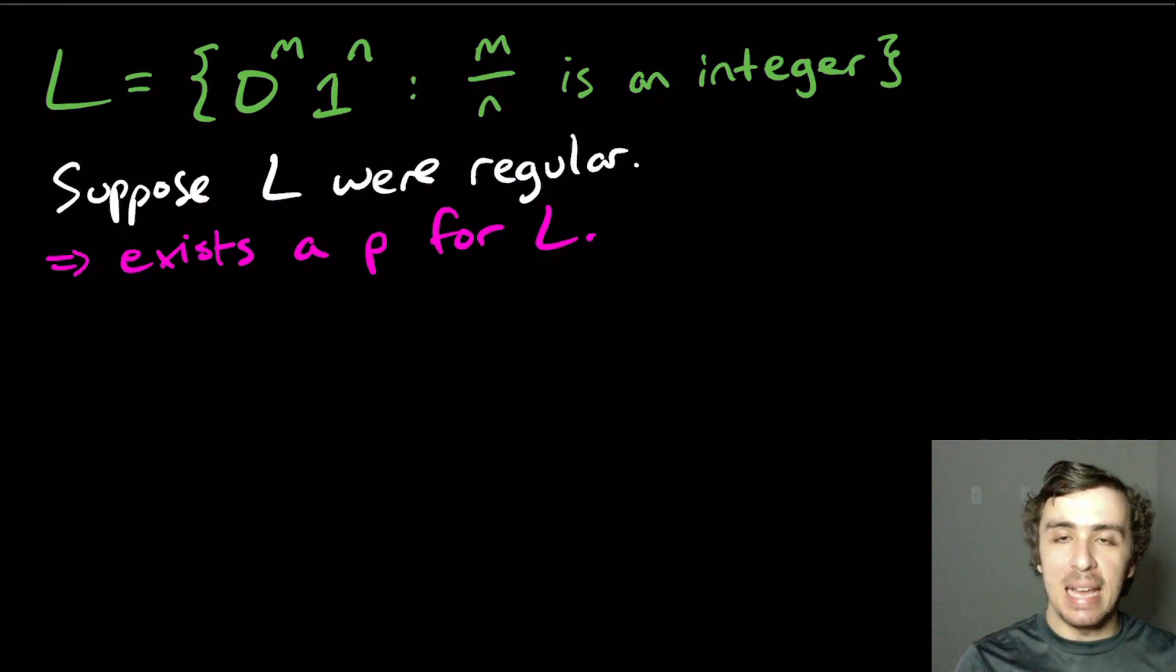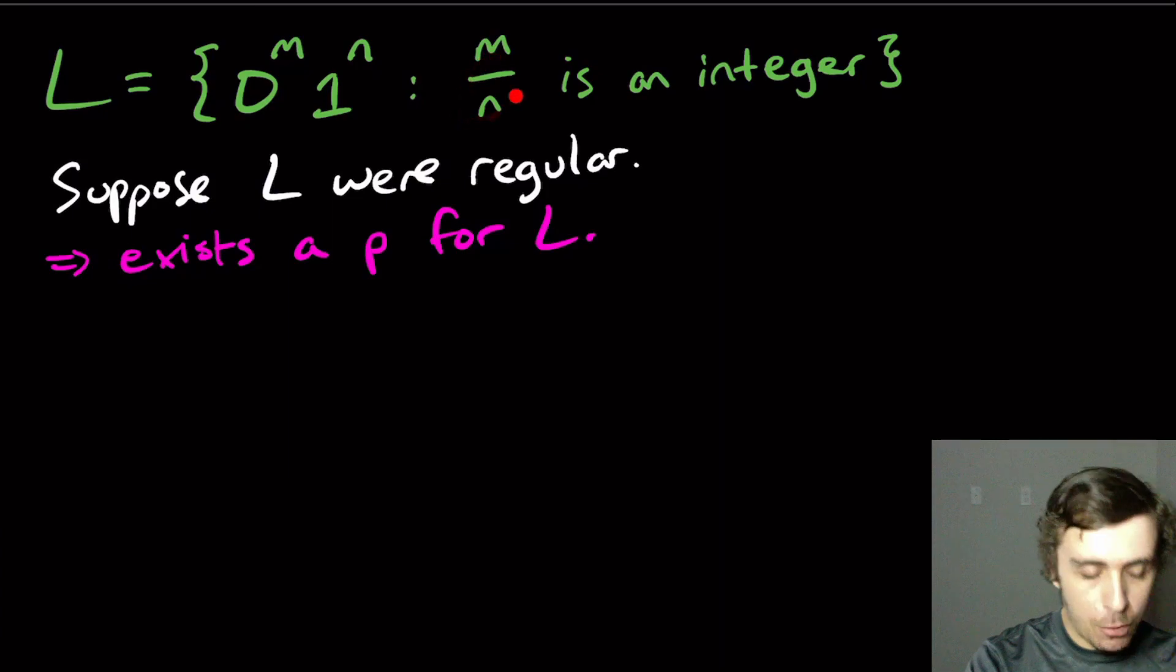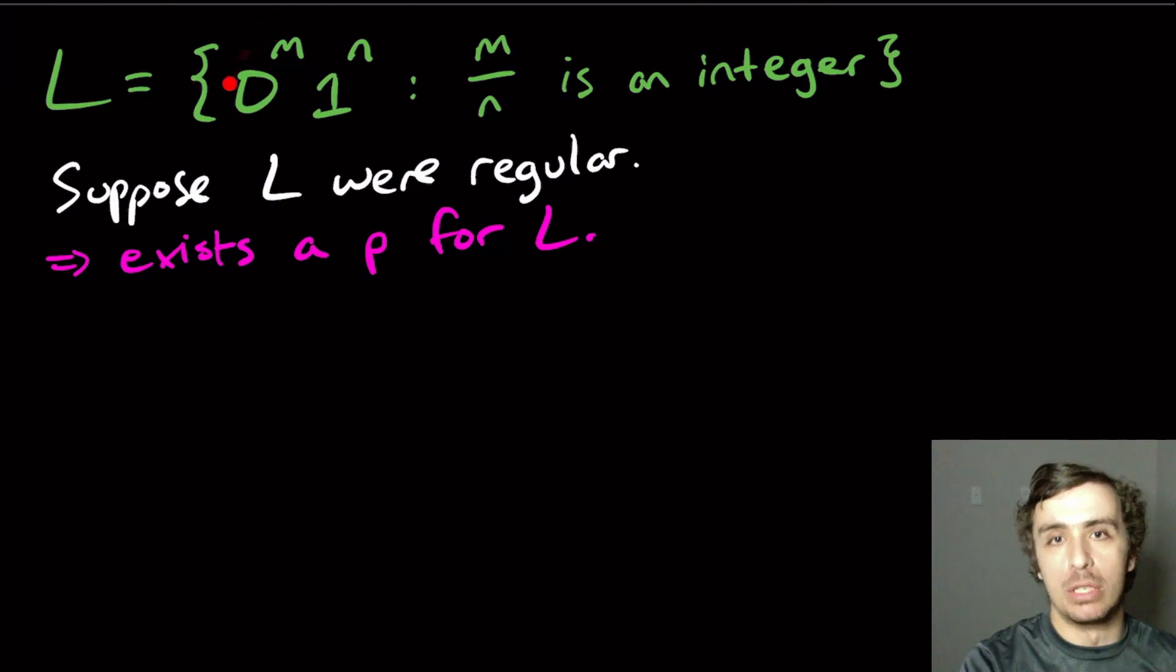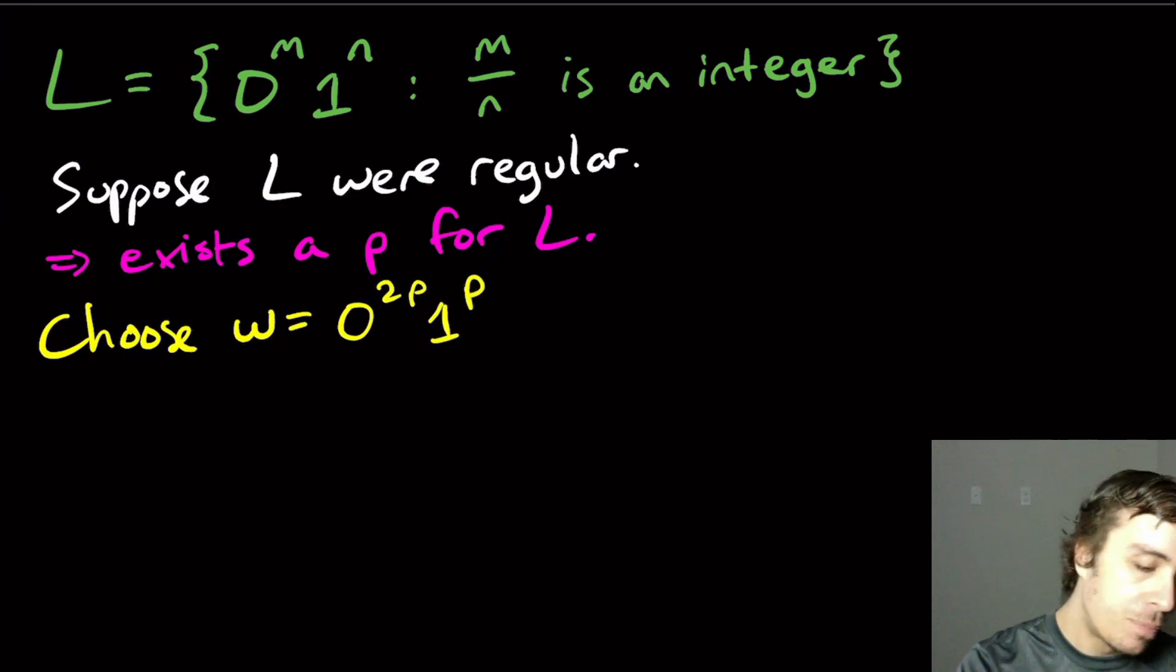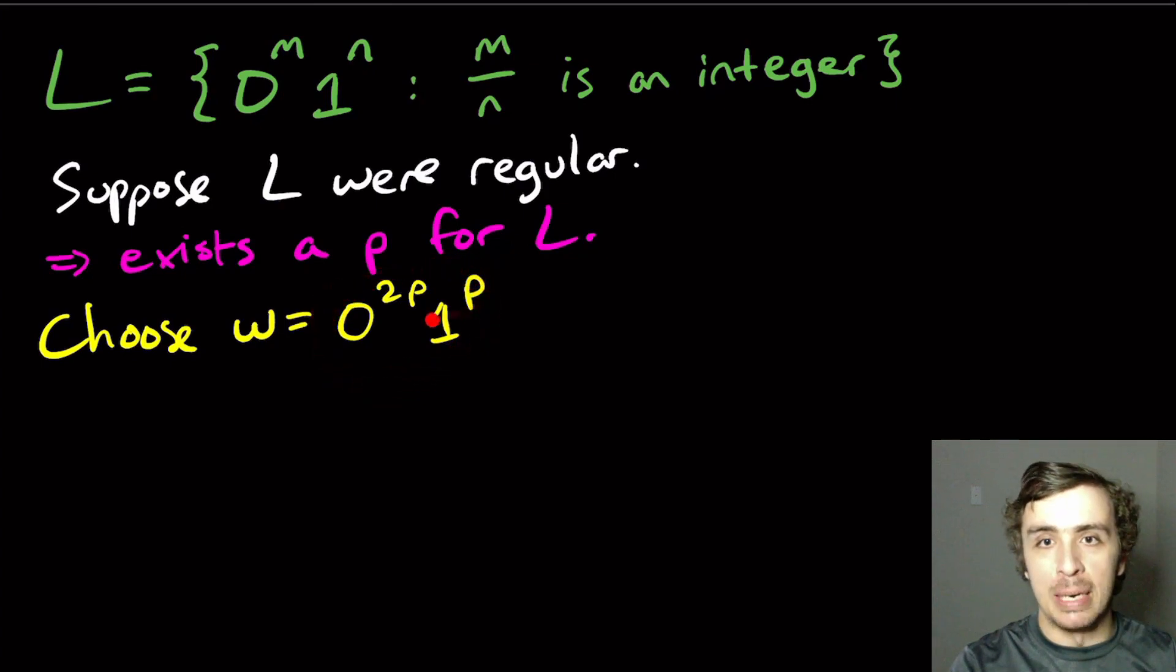OK, so then now we've got to pick a string that's in the language and of length at least p. So we also have, of course, we need to have the number of zeros divided by the number of ones being an integer. In other words, number of zeros is a multiple of the number of ones. So let's go ahead and choose a string. And this string will not be useful for us, but I just want to show it anyway to give you the idea. So here, let's look at this string. So we definitely have at least p characters because there are three p characters here. And this thing is in L because two p divided by p is two, and that's an integer.